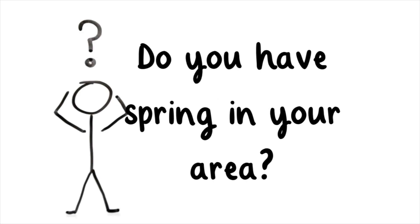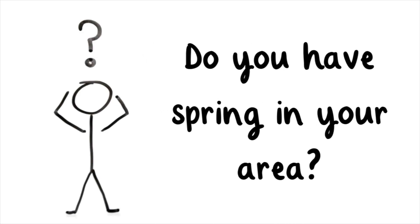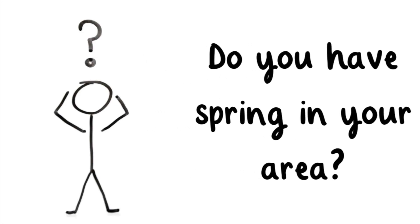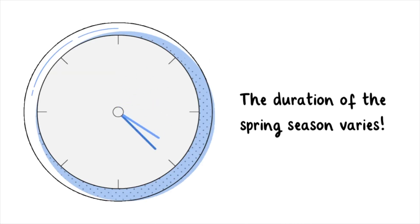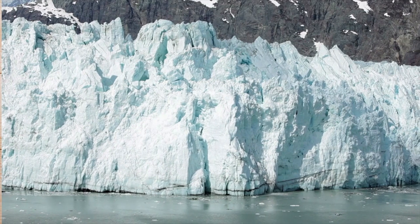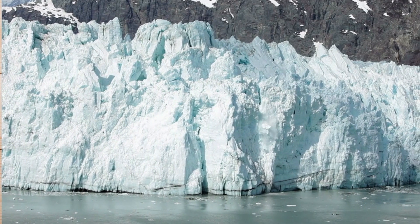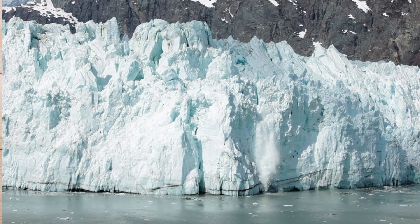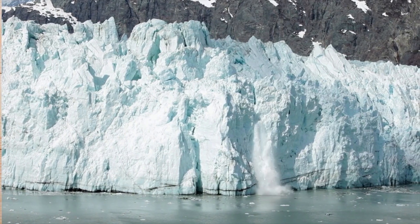Do you have spring in your area? The duration of the spring season also varies. In the United States, we enjoy three months of all that spring can offer, while in the polar regions, spring is so short a season that it's almost insignificant.